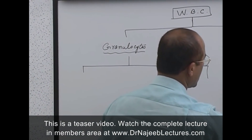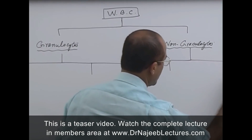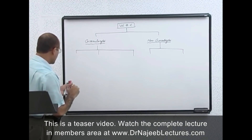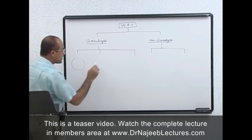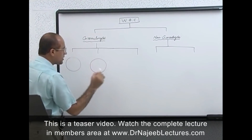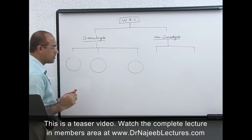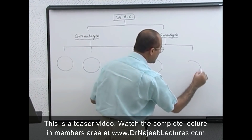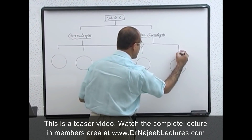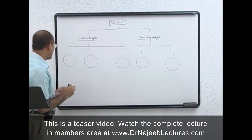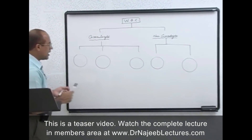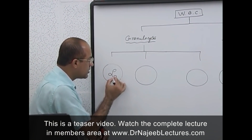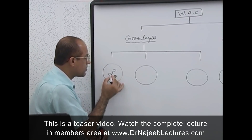Granulocytes are divided into two types of cells, and non-granulocytes are divided into two types as well. Granulocytes include neutrophils, eosinophils, and basophils. Non-granulocytes or agranulocytes include monocytes and lymphocytes.